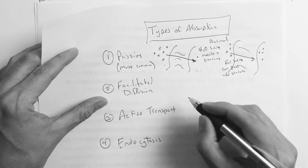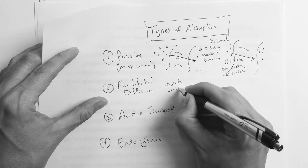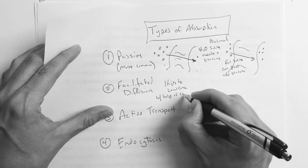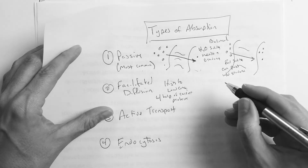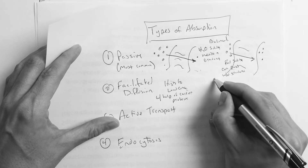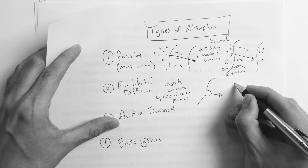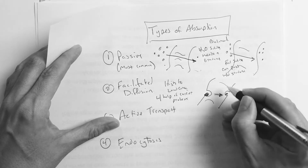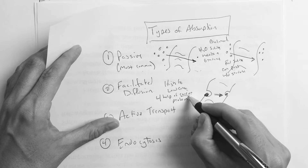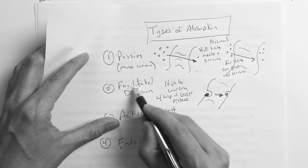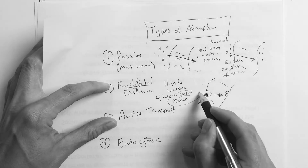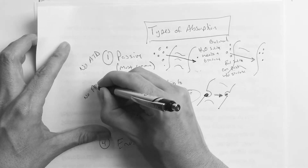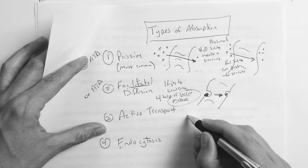Facilitated diffusion also goes from high to low concentration, but the key difference is it requires a carrier protein to help move the substance across. Something attaches and sends it across. It still goes high to low, but you need that carrier protein — that's why it's called facilitated. Importantly, both passive and facilitated diffusion do not require ATP.